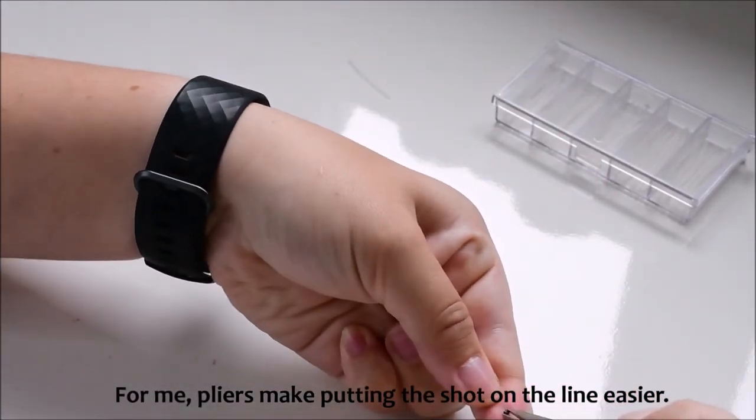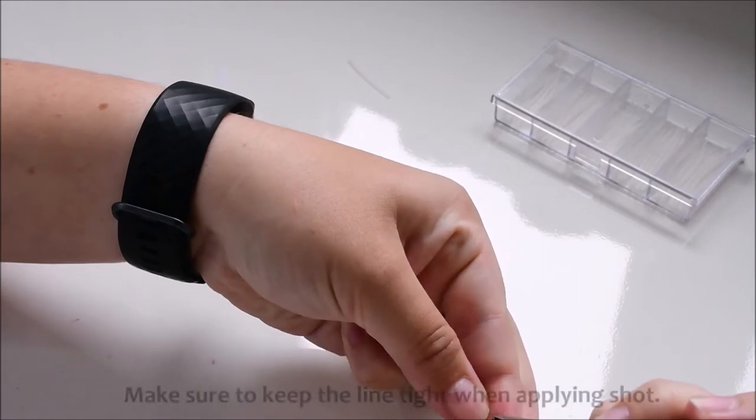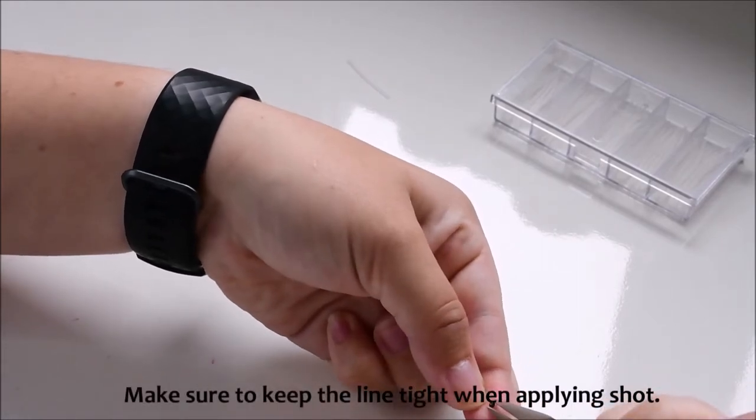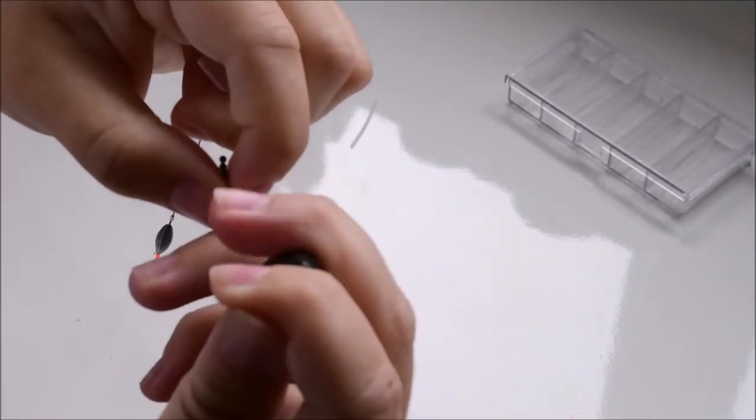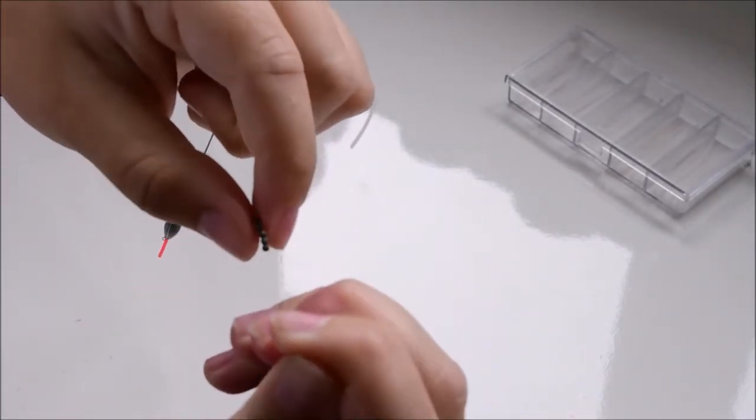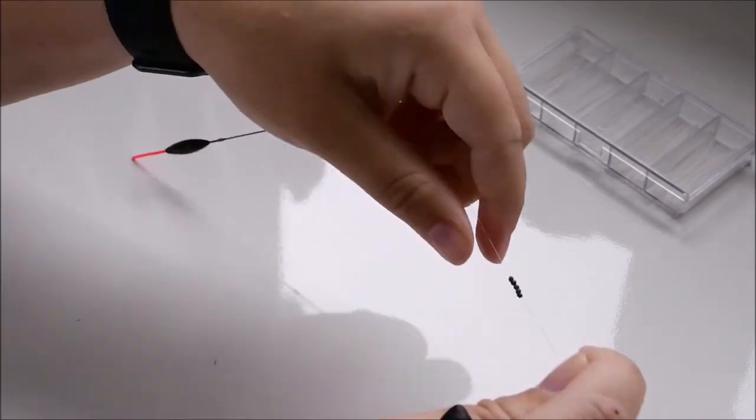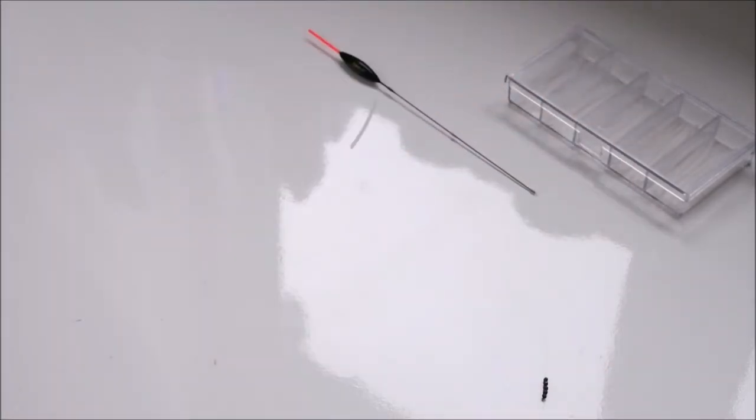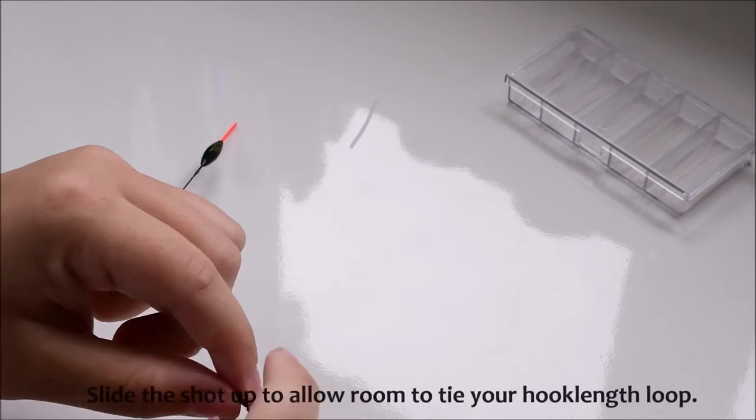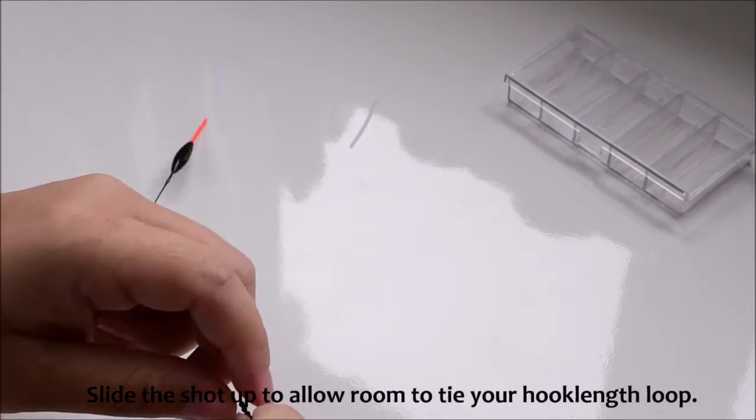For me, pliers make putting the shot on the line easier. Make sure to keep the line tight when applying shot. Slide the shot up to allow room to tie your hook length.